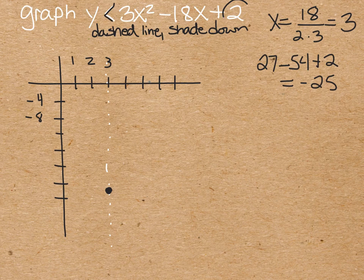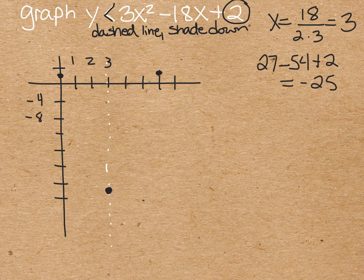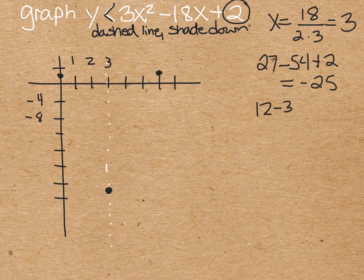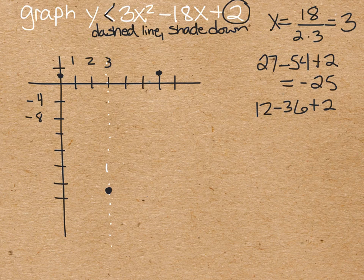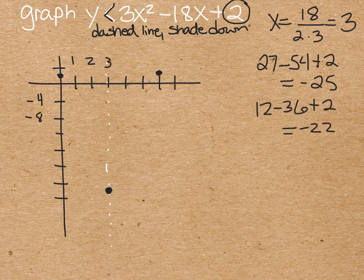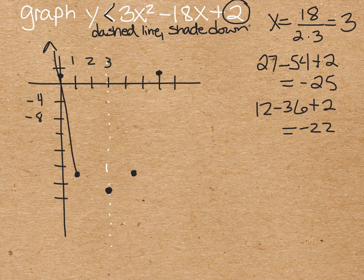We know the y-intercept is positive 2. So if that's 4, that would be 2. And we'd need to mirror it across. Then we just really need two more points inside here. So if we were to plug in a 2, we'd have 3 times 2 squared is 3 times 4, which is 12, minus 18 times 2, minus 36, plus 2. 12 minus 36 is negative 24, plus 2 would be negative 22. It's about right here. And then we can mirror it across.